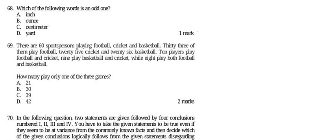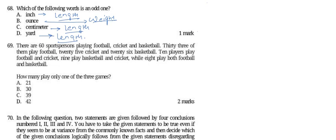Now question 68 asks which of the following words is the odd one out. The first word is inch, which is a unit of length. Ounce is a unit of weight. Centimeter is a unit of length, and yard is also a unit of length. So we have three units of length and one unit of weight — ounce is the odd one out.